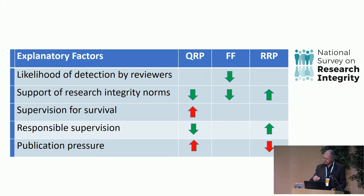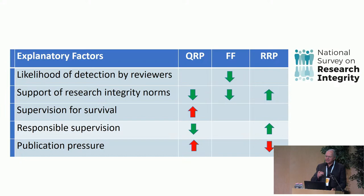Green arrows indicate associations in the right direction; red arrows indicate associations we don't want to see; there is only an arrow when the association is important and significant. When people believe that reviewers will detect fraud like fabrication, they engage less in that — that's an association, not causal, since it's cross-sectional and self-reported. By the way, it has been proven that reviewers actually do a lousy job at detecting fraud; you need other methods for that.